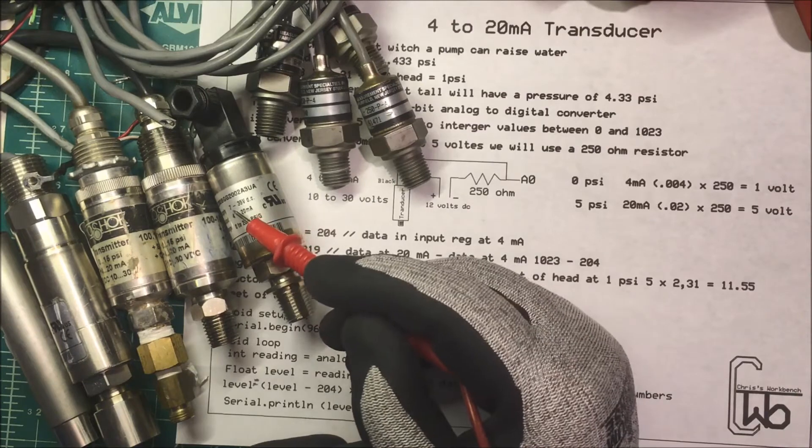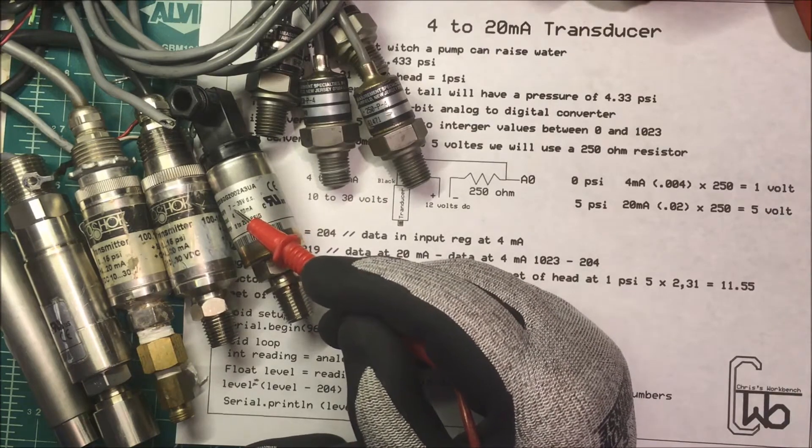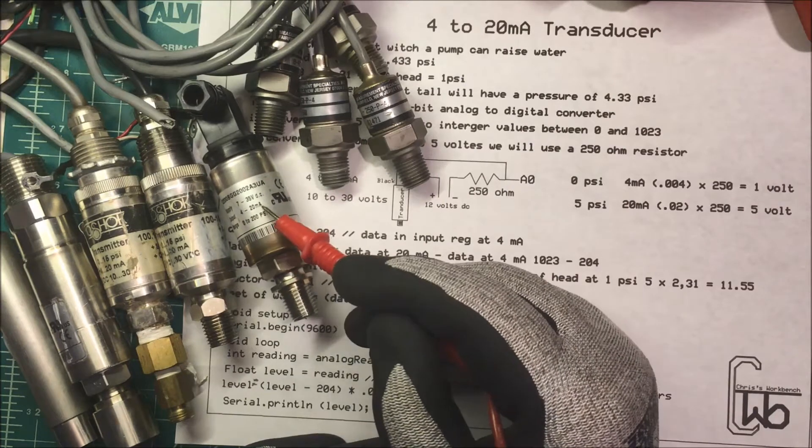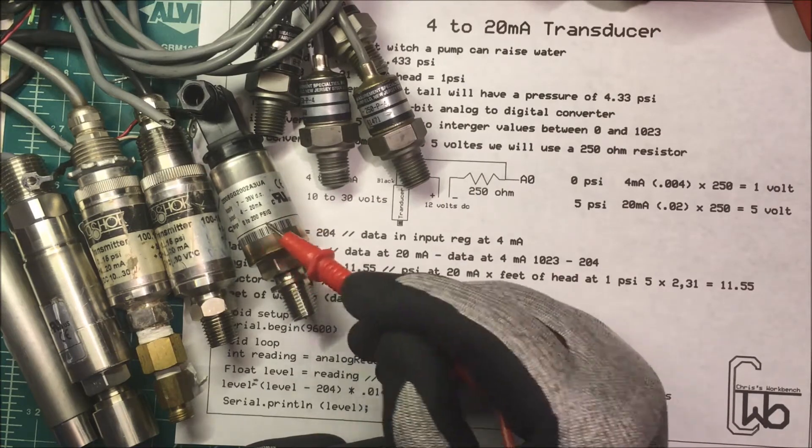Let's talk about some transducers. This one here has a supply voltage of 7 to 35 volts DC and an output from 4 to 20 milliamps with a range of 0 to 200 psi.